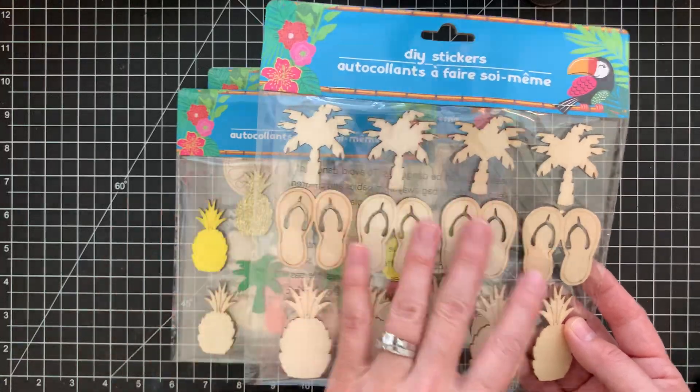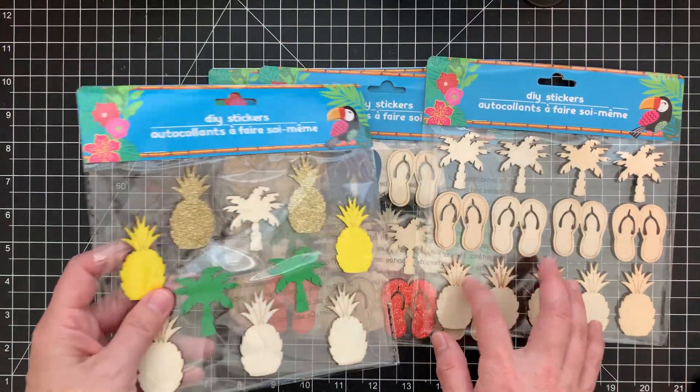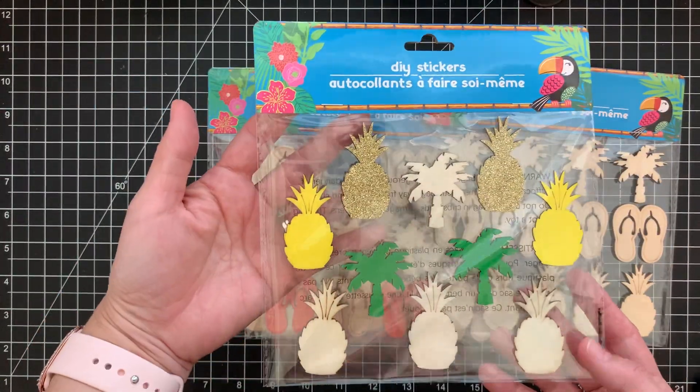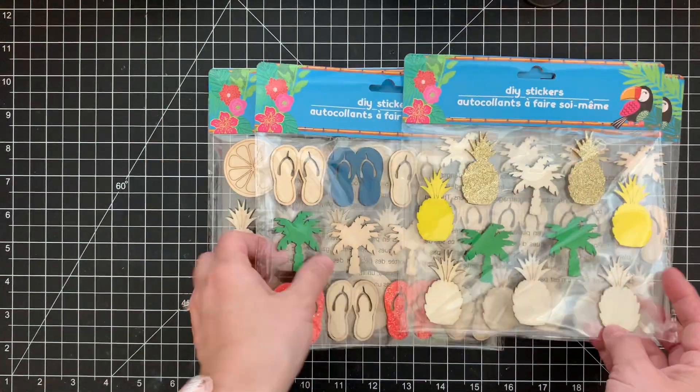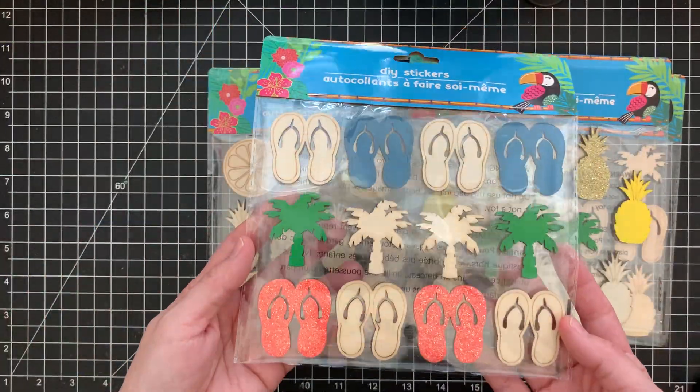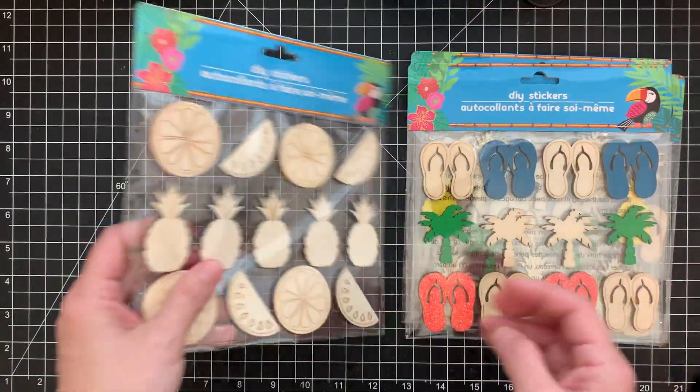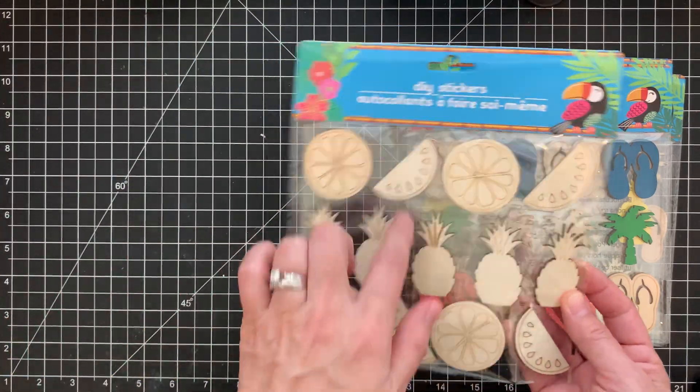And so I bought this set here. I bought several of those. I bought several of these. And then we have this one. And then we have the fruit.